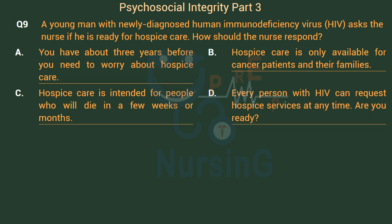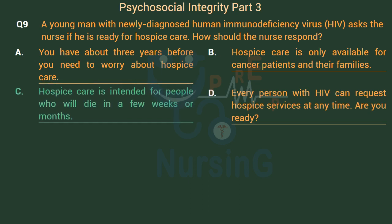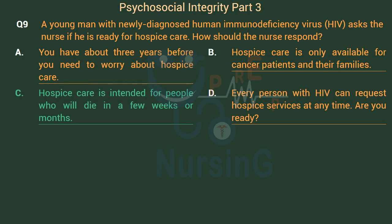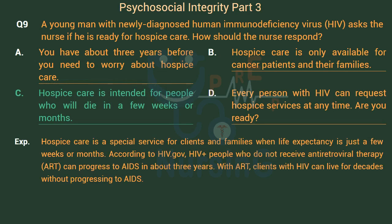The right answer is Option C: Hospice care is intended for people who will die in a few weeks or months. Hospice care is a special service for clients and families when life expectancy is just a few weeks or months. HIV-positive people who do not receive antiretroviral therapy (ART) can progress to AIDS in about 3 years. With ART, clients with HIV can live for decades without progressing to AIDS.